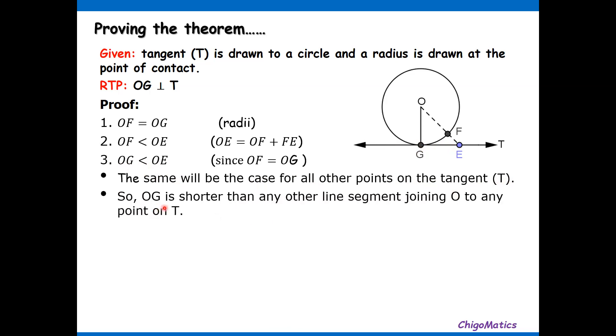So OG is shorter than any other line segment joining O to any point on T. Hence OG is perpendicular to T. QED—proof is complete.